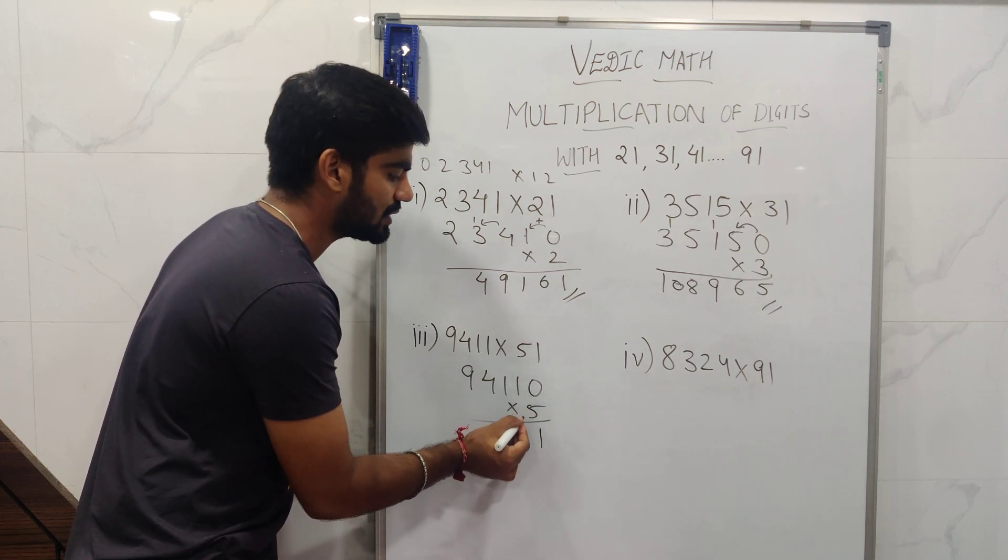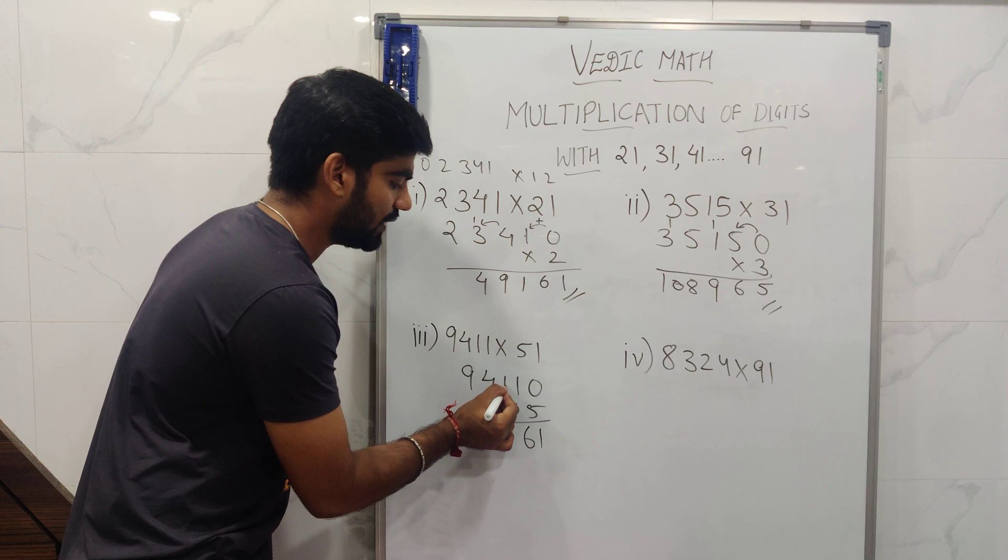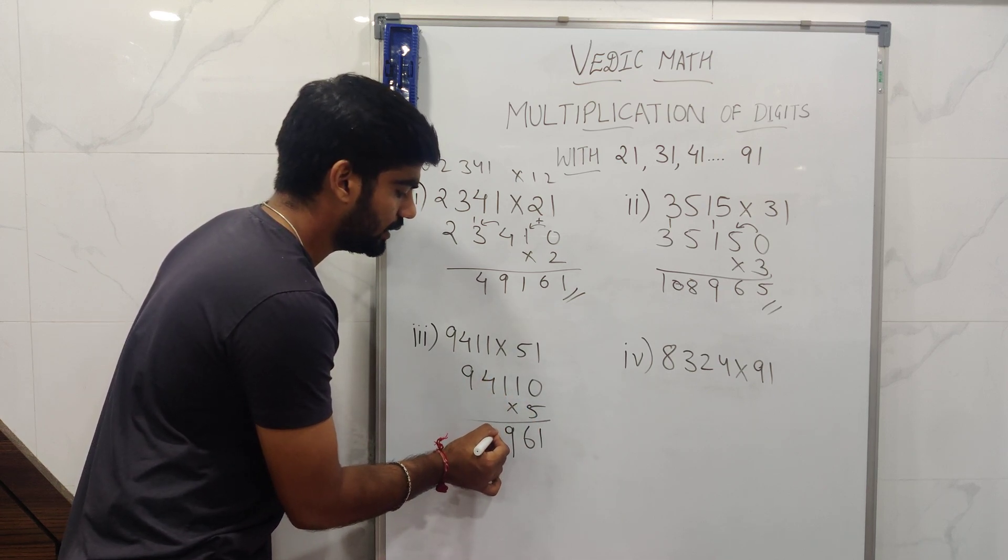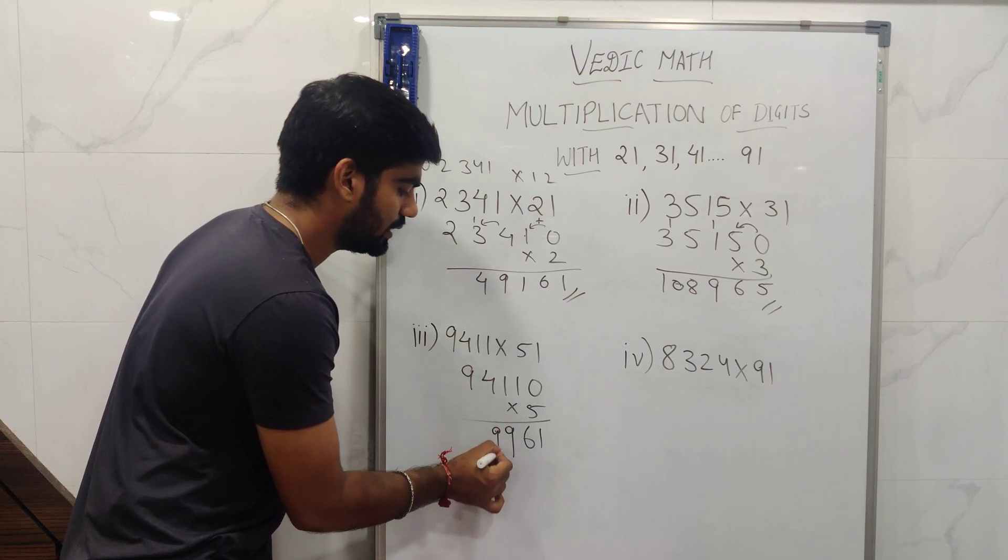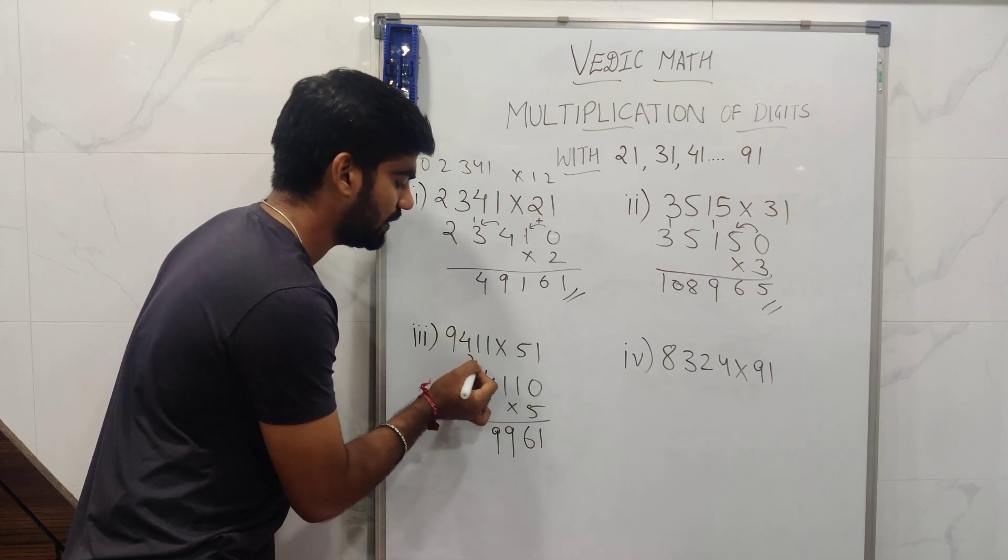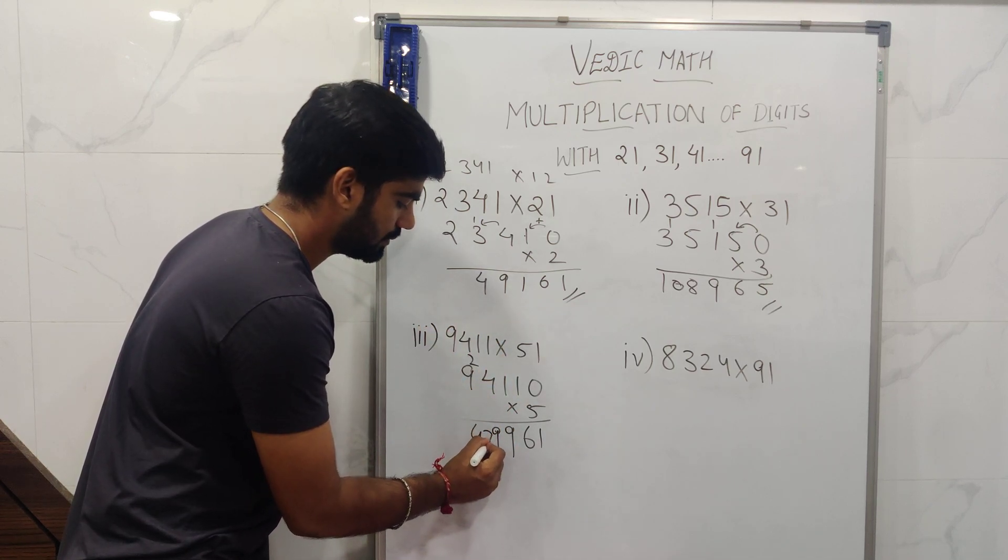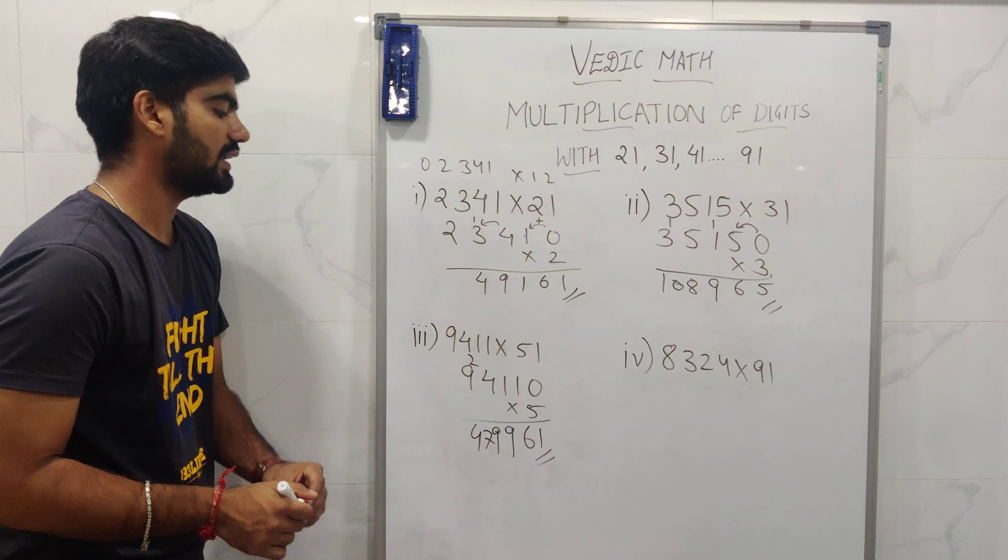5 times 4 is 20, and 20 plus 9 is 29, carry 2 over here. 9 times 5 is 45, 45 plus 2 is 47. So your answer is 479961.